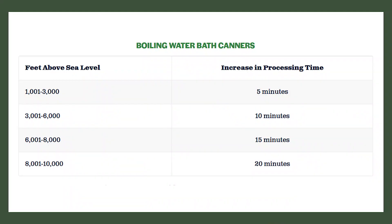Does your elevation matter when water bath canning? Yes, it does — it increases your processing time depending on your elevation. This chart shows that from 1,000 to 3,000 feet you need to increase processing time by 5 minutes, and between 8,000 and 10,000 feet above sea level you need to increase by 20 minutes. So if a recipe calls for 10 minutes and you're at 2,000 to 3,000 feet, you would actually process for 20 minutes.